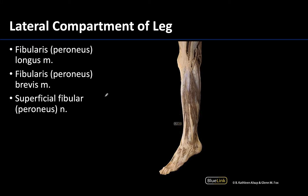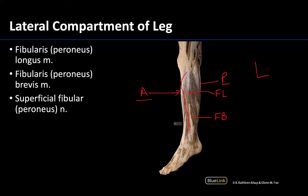Moving to the lateral compartment of the leg — this is the smallest compartment with only two muscles. The fibularis longus is located more superficially, sitting on top of the shorter and deeper fibularis brevis, or peroneus brevis. From this straight lateral view of the leg you can also see muscles from the anterior and posterior compartments, as those are quite large in comparison to the lateral compartment.